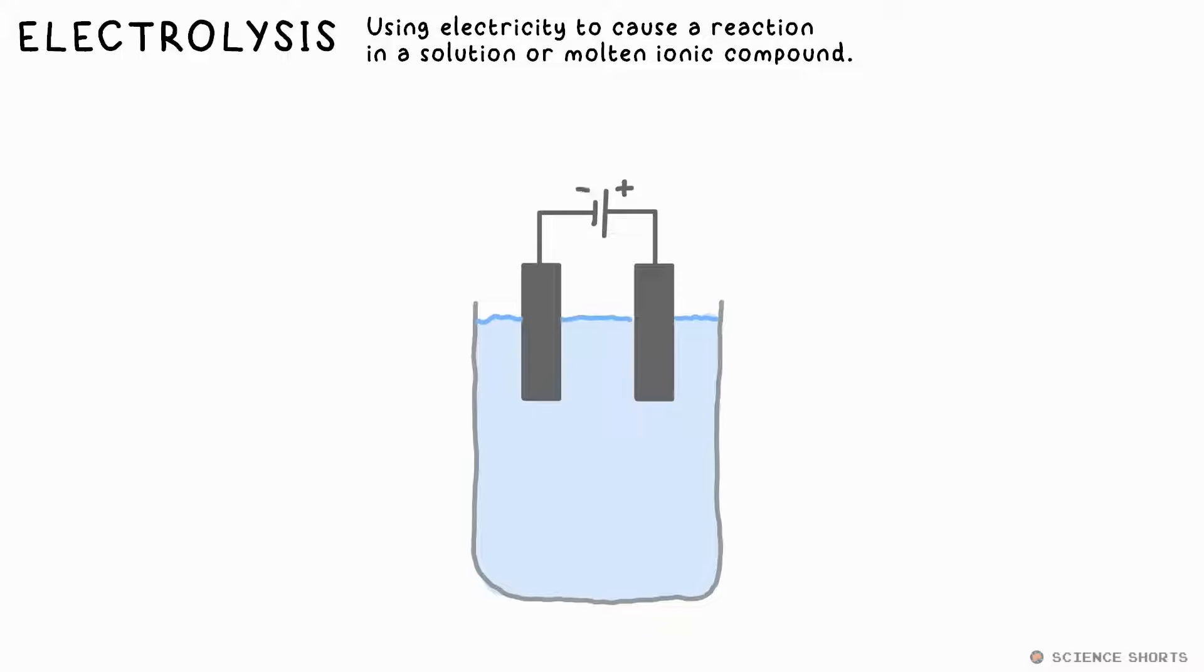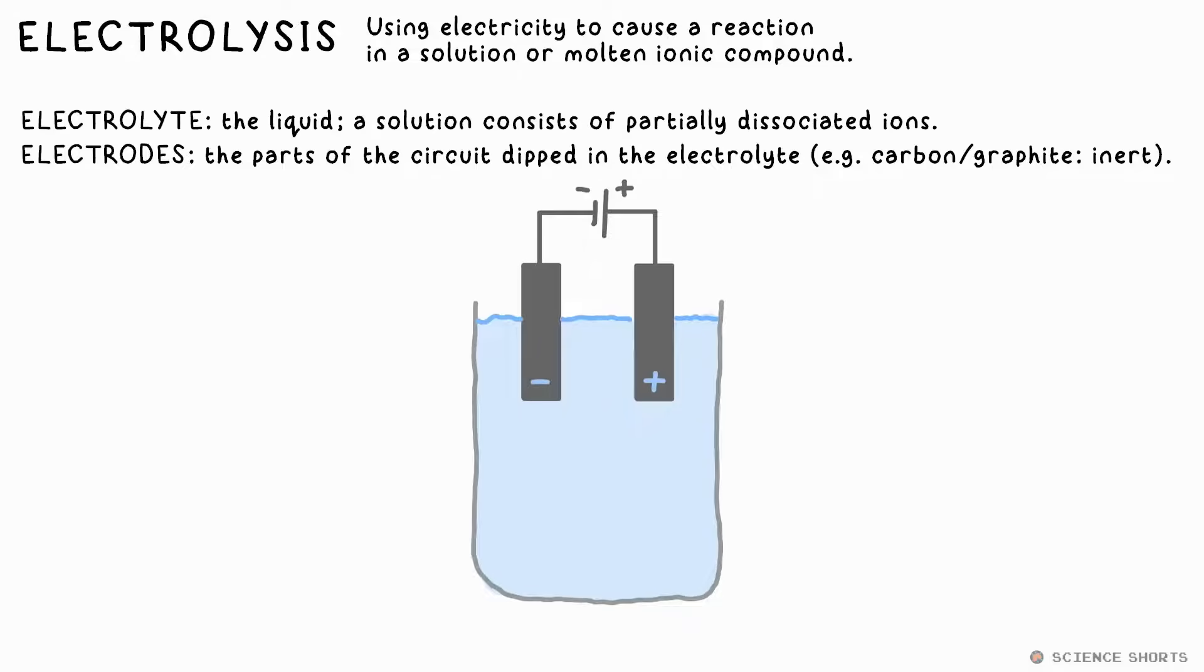You need a power supply or a battery. It must be DC, direct current. This is connected to two electrodes, two pieces of graphite, that's carbon, or a metal. They're inserted into an electrolyte, a solution, that's water with an ionic compound dissolved in it. We call the electrode attached to the negative terminal of the battery the cathode and the one attached to the positive terminal the anode.